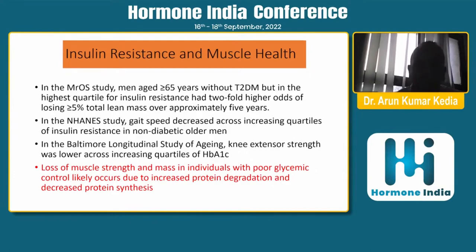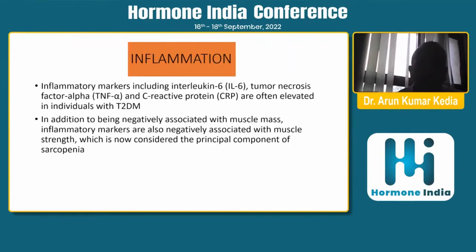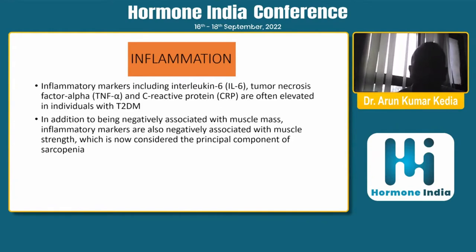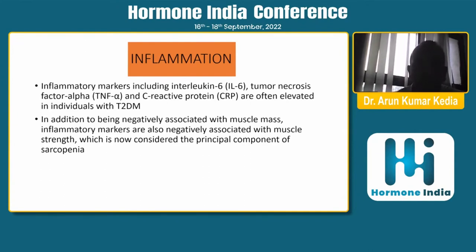The loss of muscle strength and mass in individuals with poor glycemic control is due to increased protein degradation and decreased protein synthesis. A second important mechanism is chronic inflammation associated with diabetes: IL-6, tumor necrosis factor alpha, and C-reactive proteins are all elevated in type 2 diabetes, especially with associated obesity. Studies show an inverse relationship between IL-6 and muscle strength, and between CRP and hand grip strength. These inflammatory markers are negatively associated with muscle strength, now considered the principal component of sarcopenia.